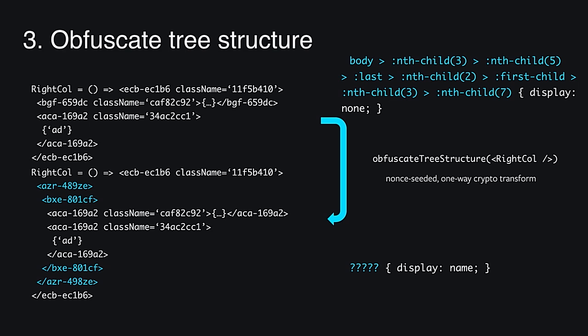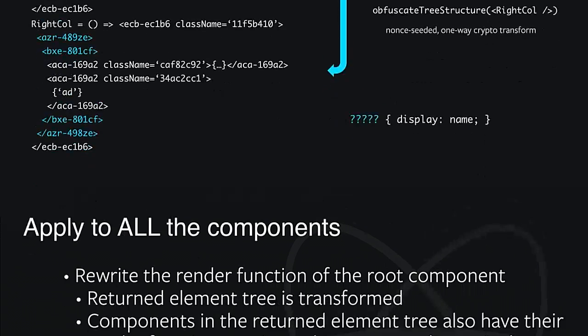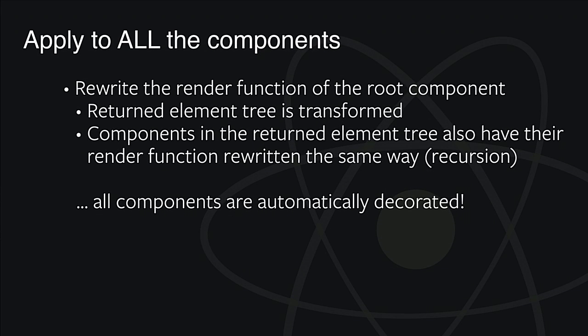Though it is completely impossible for third-party selectors to target our DOM. So far, we have demonstrated how to obfuscate a single component, but for the transform to be effective, all components should be decorated. To do this, we use a simple yet powerful trick, which has many applications besides preventing ad blockers from working. We rewrite the render function of the root component so that the return element tree is transformed using the transformations just described. But then, we also rewrite the render function of the components appearing in the return element tree exactly the same way. In this way, we have defined a recursive tree transformation that will be automatically applied to all the components in the tree, without having to manually decorate each one of them.